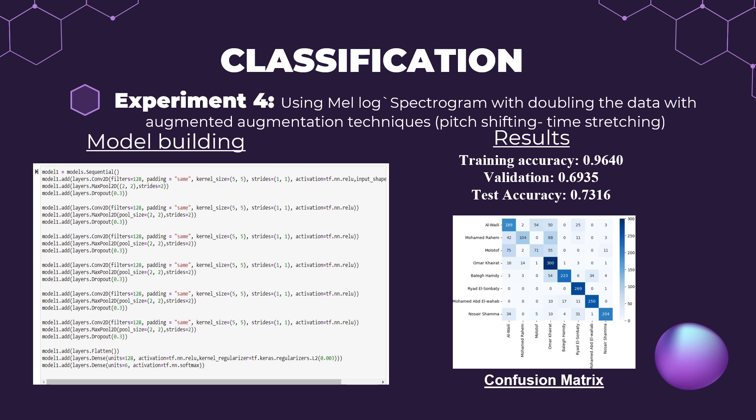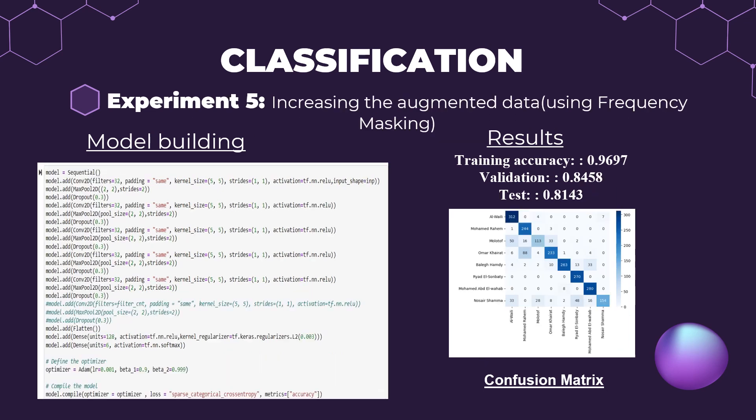We stretched the audio at specific rates and shifted the pitch of the audio as well. The results in this experiment were much better than the previous ones, using the same models. For the last experiment, we increased the augmented data and applied a frequency masking technique, which enhanced the audio quality by reducing noise in specific parts of the audio. Using the same model as the previous two experiments, the results were much better — the overfitting was reduced by a great amount compared to previous experiments, and the model was able to correctly identify almost all composers.